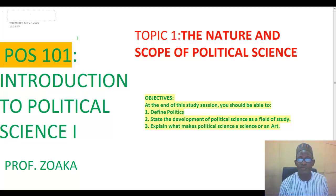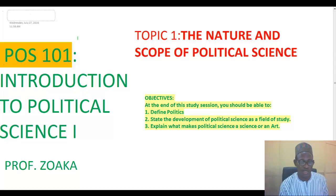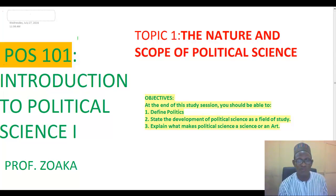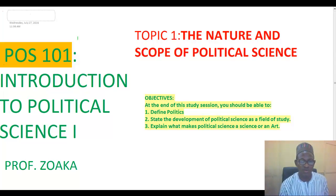The first topic that we shall be treating during this course is titled 'The Nature and Scope of Political Science.' In looking at this topic, we are going to try to achieve the following objectives. At the end of this study session, we should be able to: 1. Define politics. 2. State the development of political science as a field of study. And then explain what makes political science a science or an art subject.